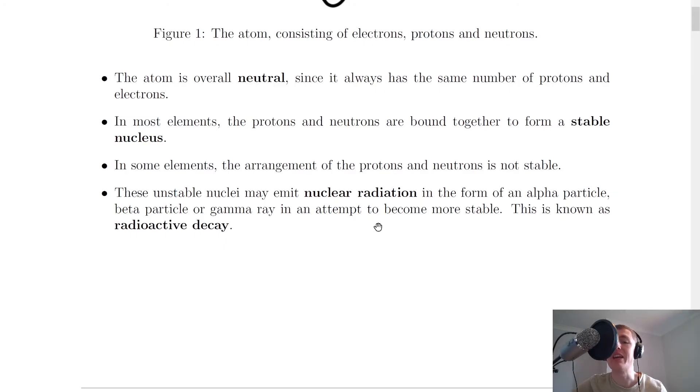So nuclear radiation is emitted as a result of this thing called radioactive decay and we're going to see later on that alpha particles, beta particles and gamma rays are our three main types of nuclear radiation. So in a sense this statement here is explaining to us why we get radiation in the first place. All it is is to do with unstable nuclei wanting to become more stable so they emit radiation to do so.